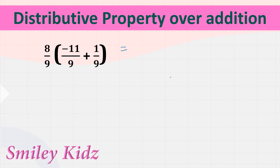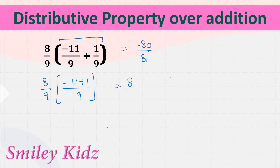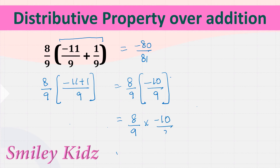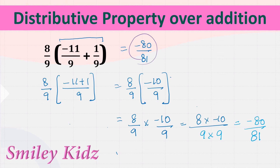We got the answer as −80/81. Let's cross-check. First we solve the brackets: 8/9 multiplied by (−11/9 plus 1/9). We have different signs so we subtract, which gives −10/9. Now removing the brackets: 8/9 multiplied by −10/9. Multiplying: 8 times −10 over 9 times 9 equals −80/81. Both answers are the same. This is the distributive property over addition.